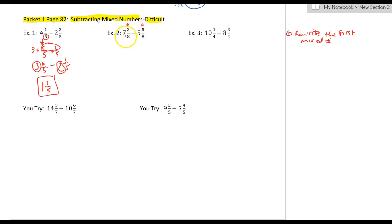So the next one, seven and three-eighths. Since three-eighths has a smaller numerator than five-eighths, we're going to write seven and three-eighths as six plus, I'm going to make that eight over eight, plus three over eight. So this first mixed number is going to become six, eight plus three is eleven, over eight, minus five and five-eighths.